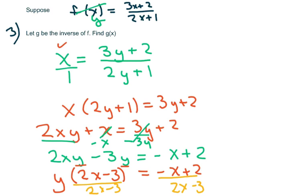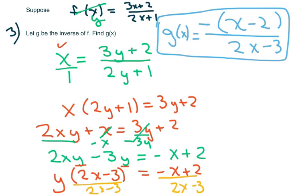Now, the way they have it, I'm going to pull out the negative here. When I pull out a negative, I'm going to put it in the numerator. That's going to be x minus 2 over 2x minus 3. So the inverse is g of x equals this. And that's your answer.